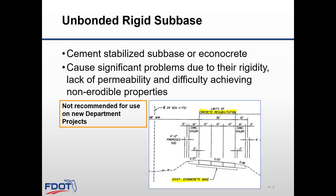In the past, the department has used unbonded rigid sub-base such as cement-stabilized sub-base or econocrete. These designs have caused significant problems due to their rigidity, lack of permeability, and difficulty achieving non-erodible properties. These are not recommended for use on new department projects.